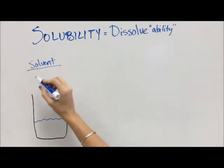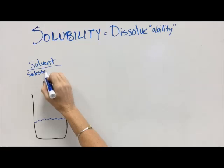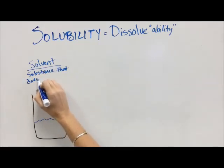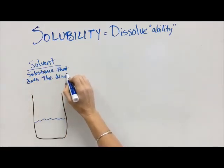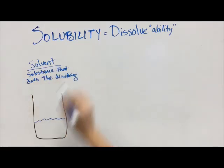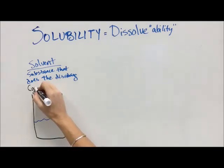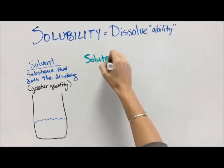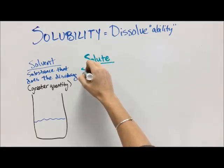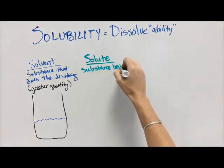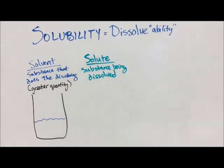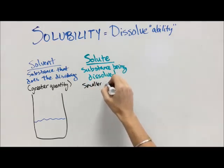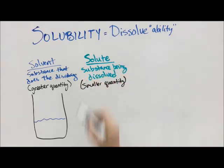When we have a substance in a container here, we're going to call this a solvent. This is a substance that does the dissolving. It is typically the substance that has the greater quantity between two or more substances that are doing the dissolving. A solute is the substance being dissolved, and it is the one with the smaller quantity — though it doesn't always have to be.